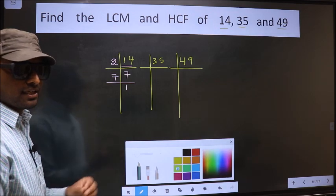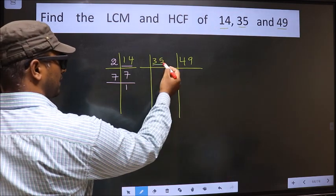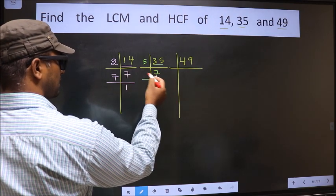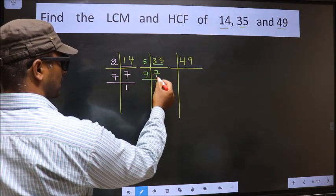Now the other number, 35. 35 is 5 times 7. Now we have 7. 7 is a prime number, so 7 times 1 is 7.